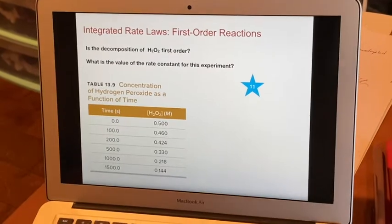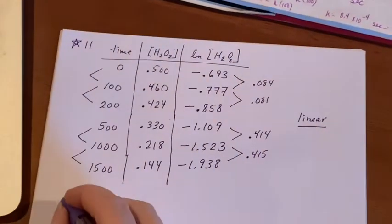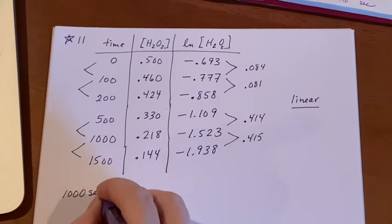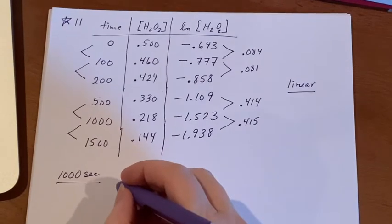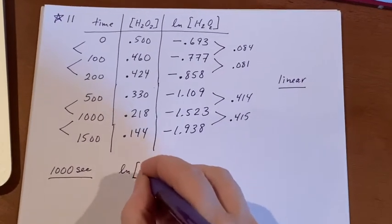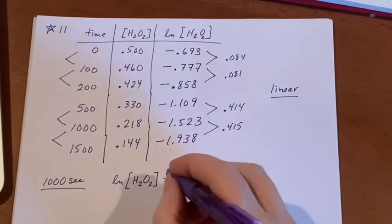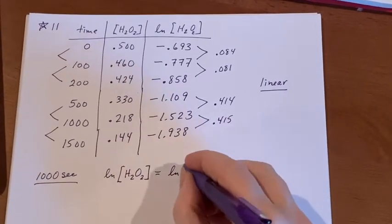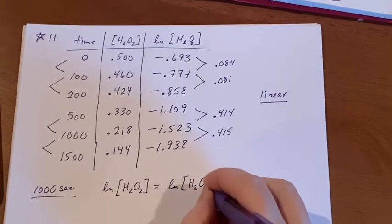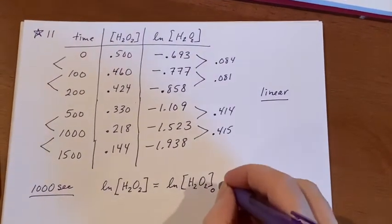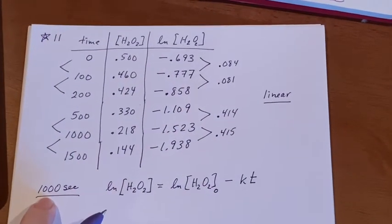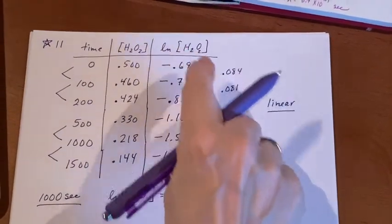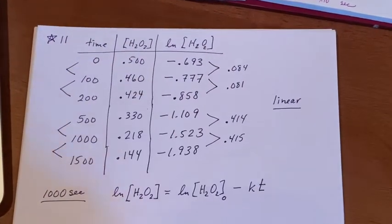Now, the other question is what's the value of the rate constant? I can pick one of these to do that. Let's say that I pick 1,000 seconds. I'm going to use the data from here. What was the rate equation? It was the logarithm of, in this case, the concentration of hydrogen peroxide equals the logarithm of the hydrogen peroxide value at zero and then minus KT. I'm looking for K. The T is going to be the 1,000. These numbers I can get from up here and here. So let's fill them in.